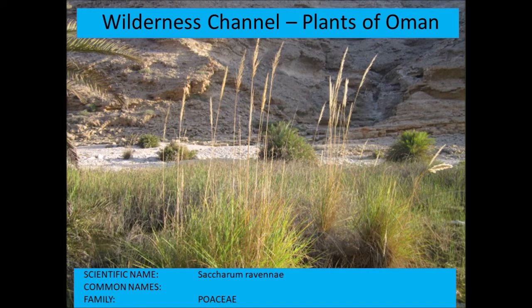Saccharum ravennae is one of the reed species that grows in many of the wadis — it can often be mistaken for a Phragmites reed, which is slightly different.